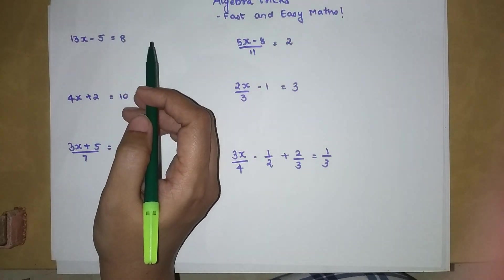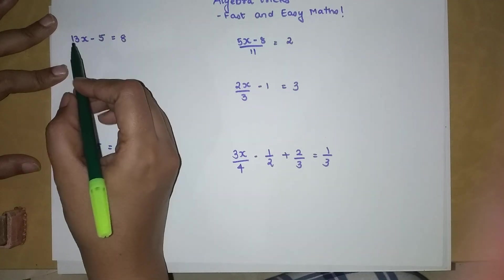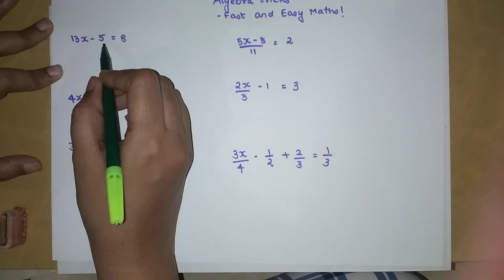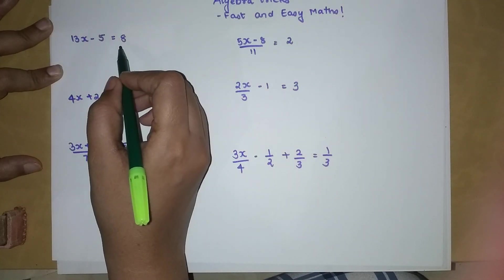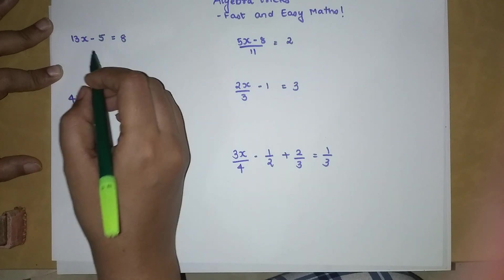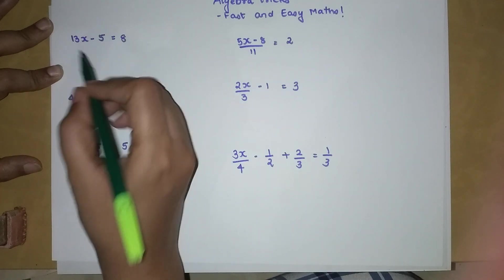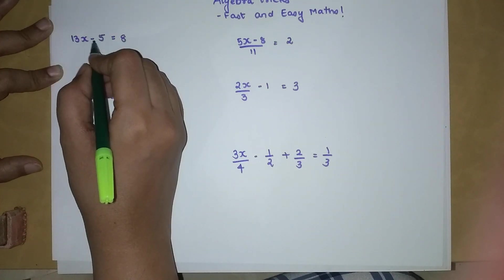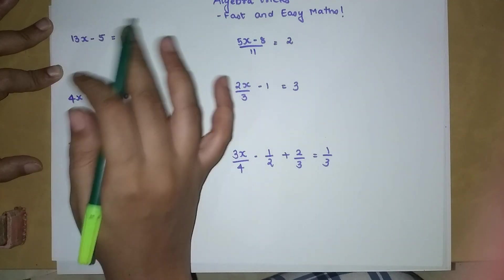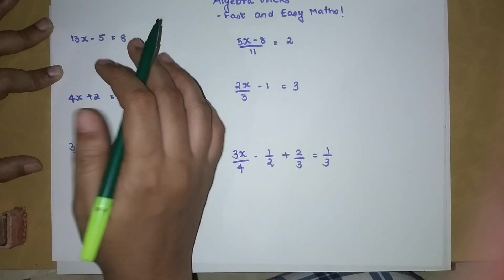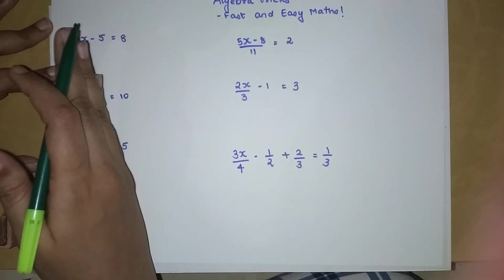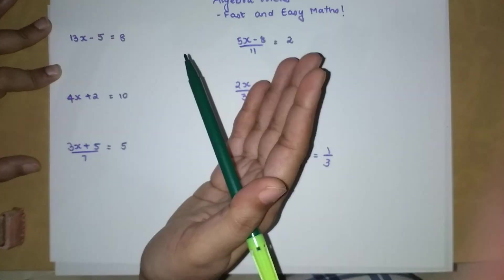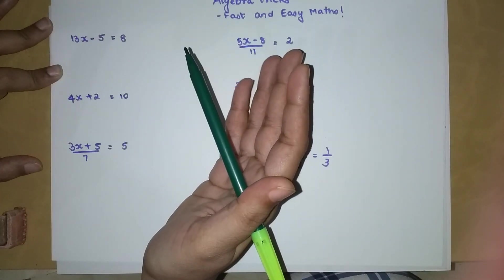So basically, when you have 13X minus 5 is equal to 8, the very important rule of algebra is putting your X on one side of the equal to sign and shifting all the other numbers on the other side.